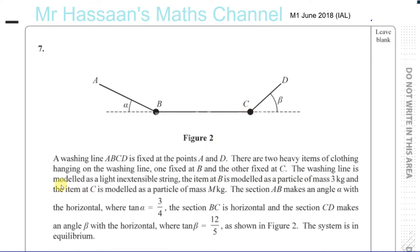The washing line is modeled as a light and extensible string. The item at B is modeled as a particle of mass 3 kilograms. So this is 3 kilograms. This one is M kilograms. So this has got a weight of 3G Newtons acting down. This has got a weight of MG Newtons acting down.